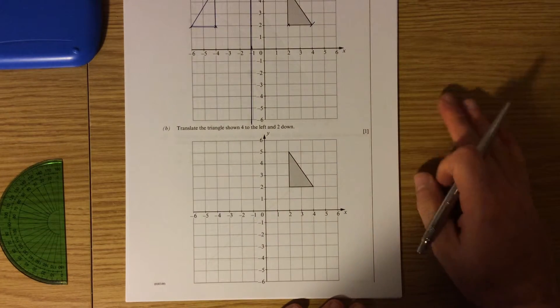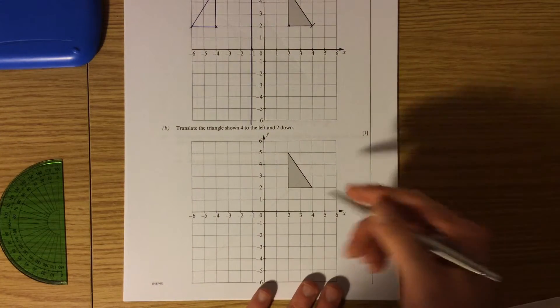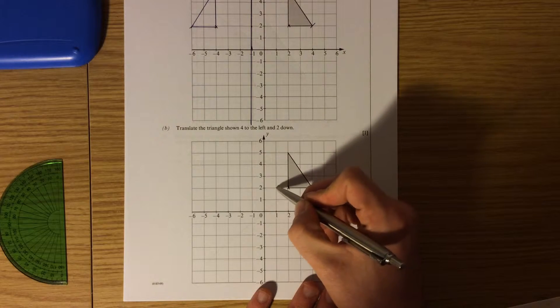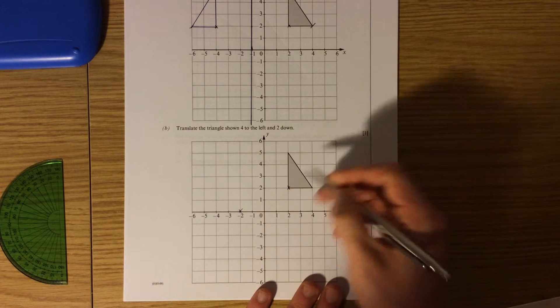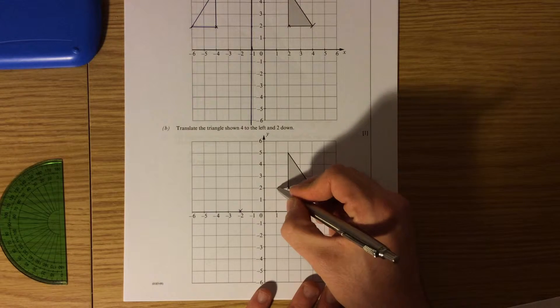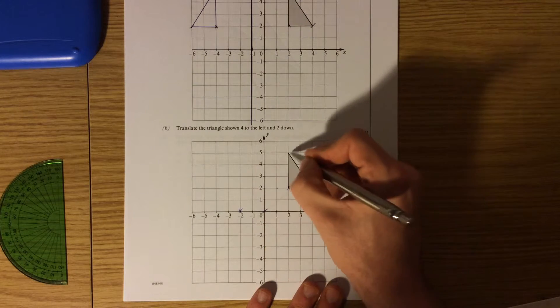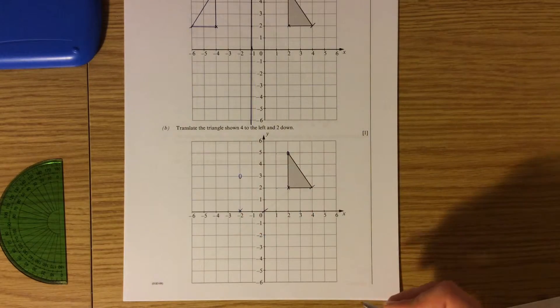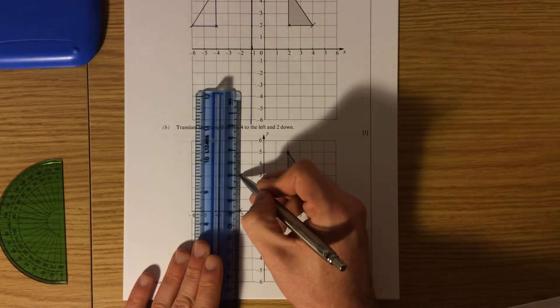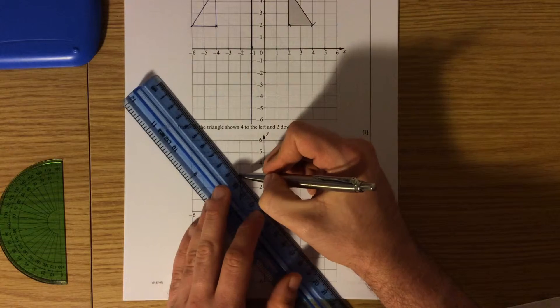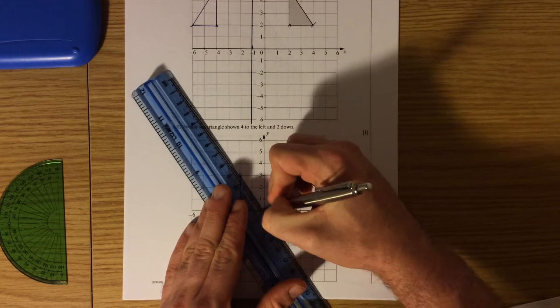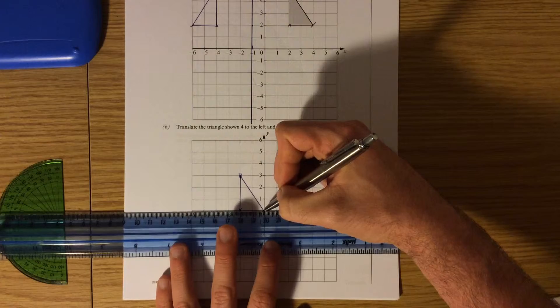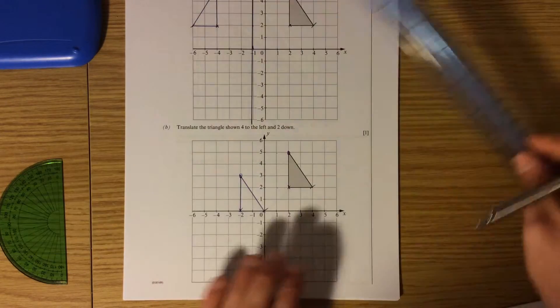Part B, translate the triangle shown 4 to the left and 2 down. So again each point has to go 1, 2, 3, 4 and 2 down. 1, 2, 3, 4 and 2 down. 1, 2, 3, 4 and 2 down. And again I've now got the new location of my shape. This triangle will be facing the same way as the original as it hasn't been rotated or reflected. It has simply been shifted around on the grid.